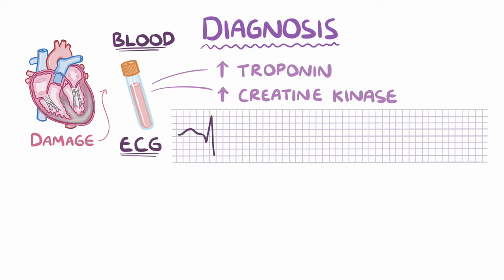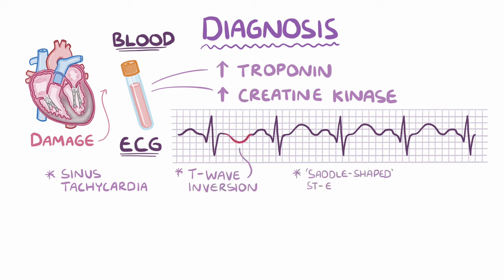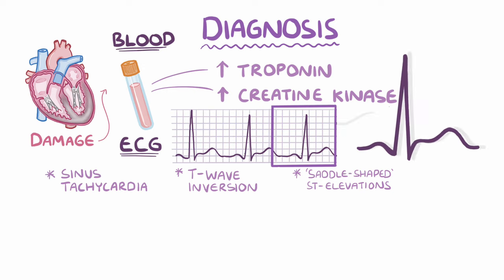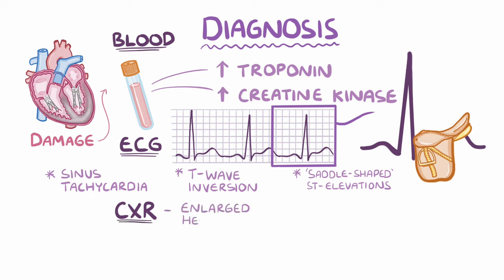An electrocardiogram can show sinus tachycardia — a fast heart rate — as well as T-wave inversions and saddle-shaped ST-segment elevations, because it looks a bit like a horse saddle. In addition, a chest X-ray might show an enlarged heart, while echocardiography might show inflamed heart muscle walls.